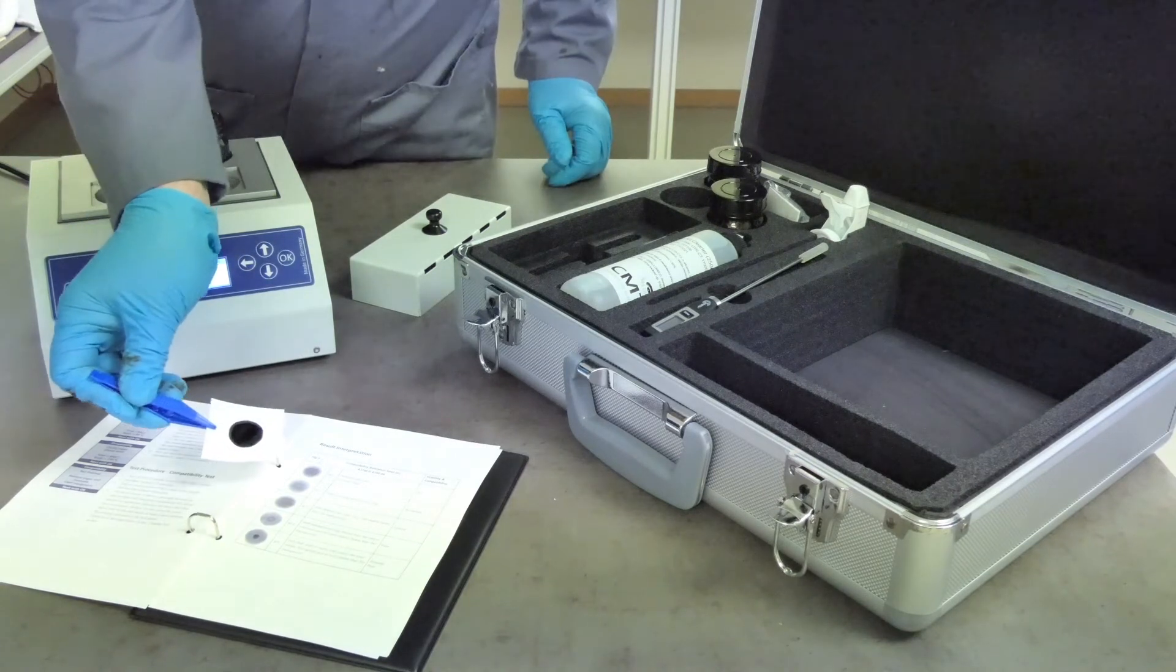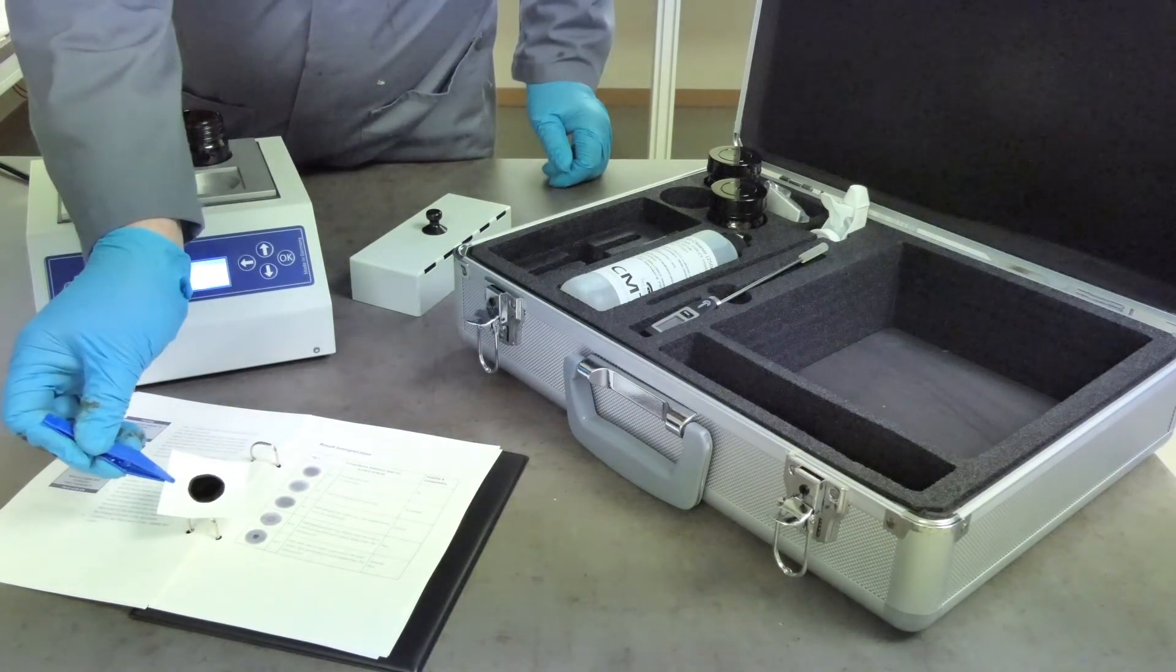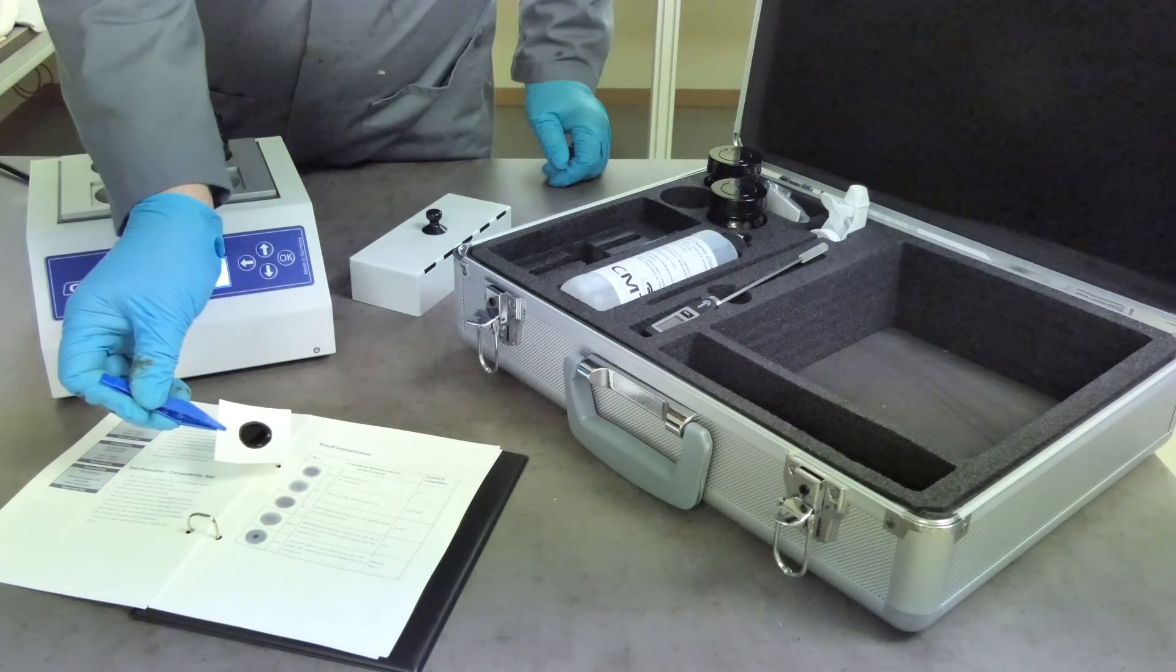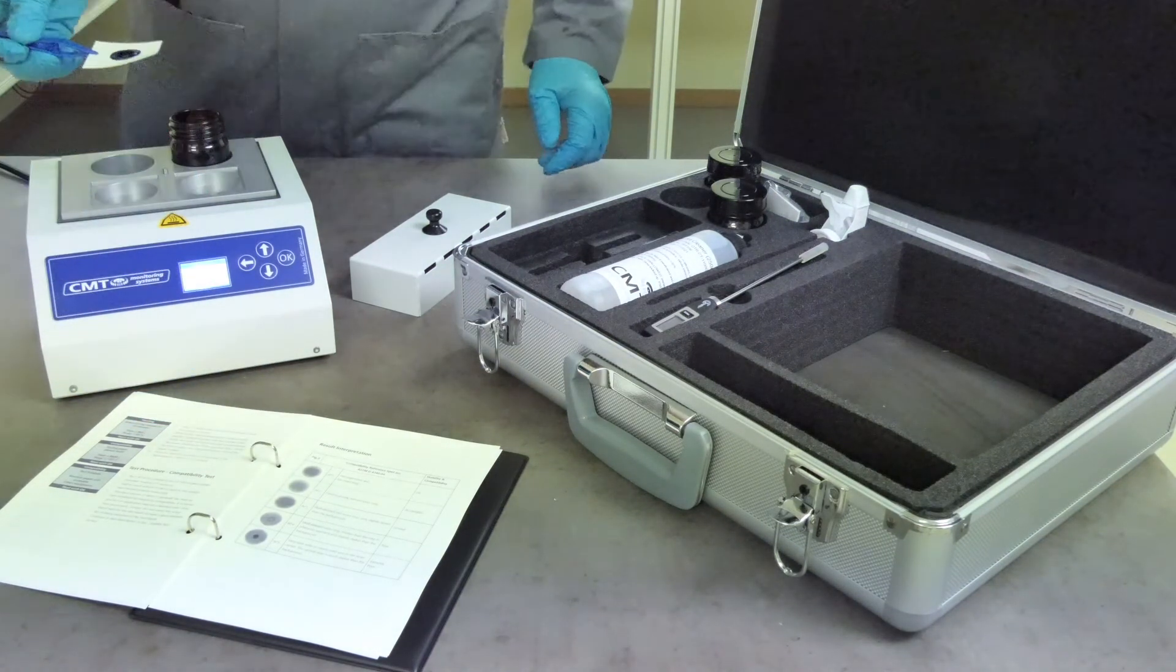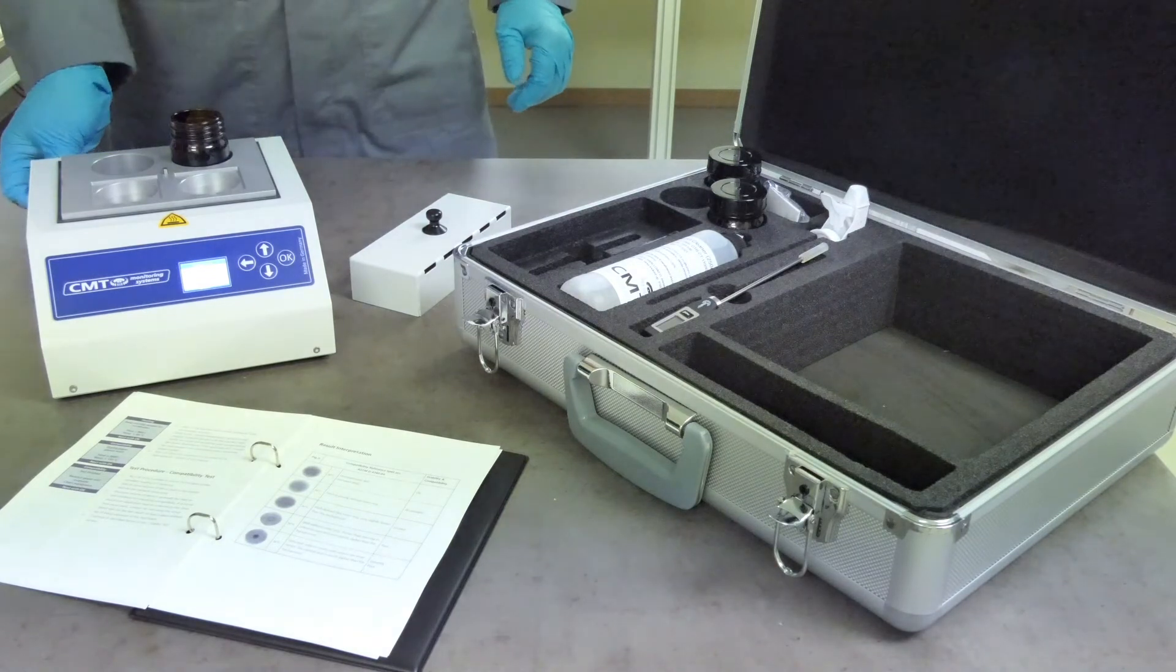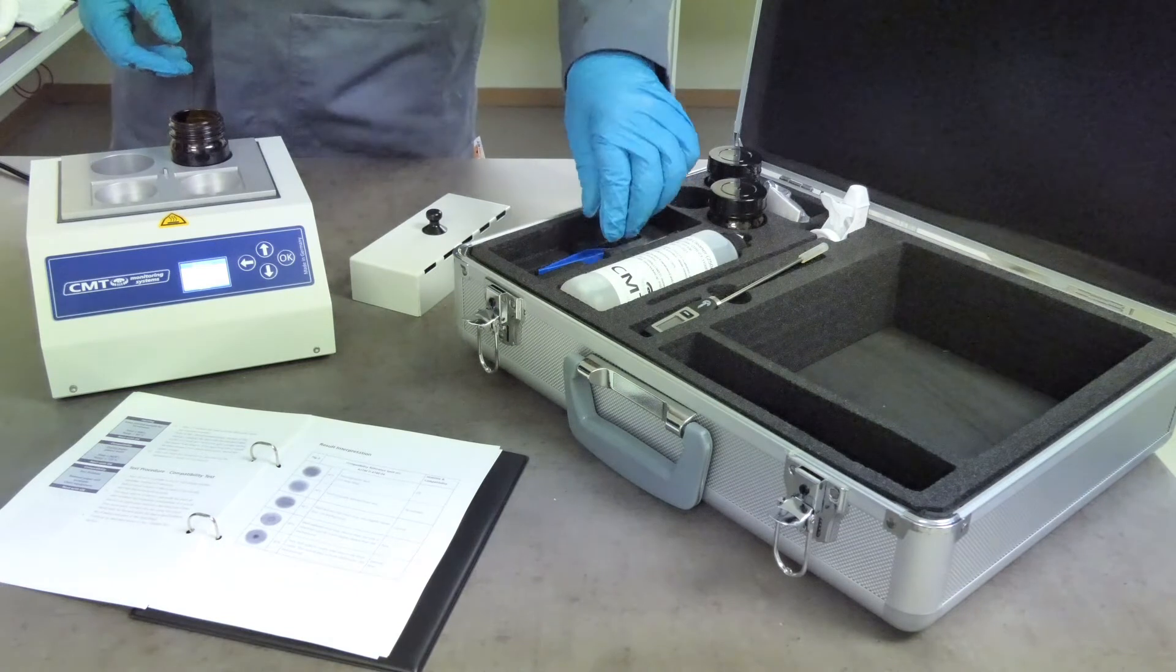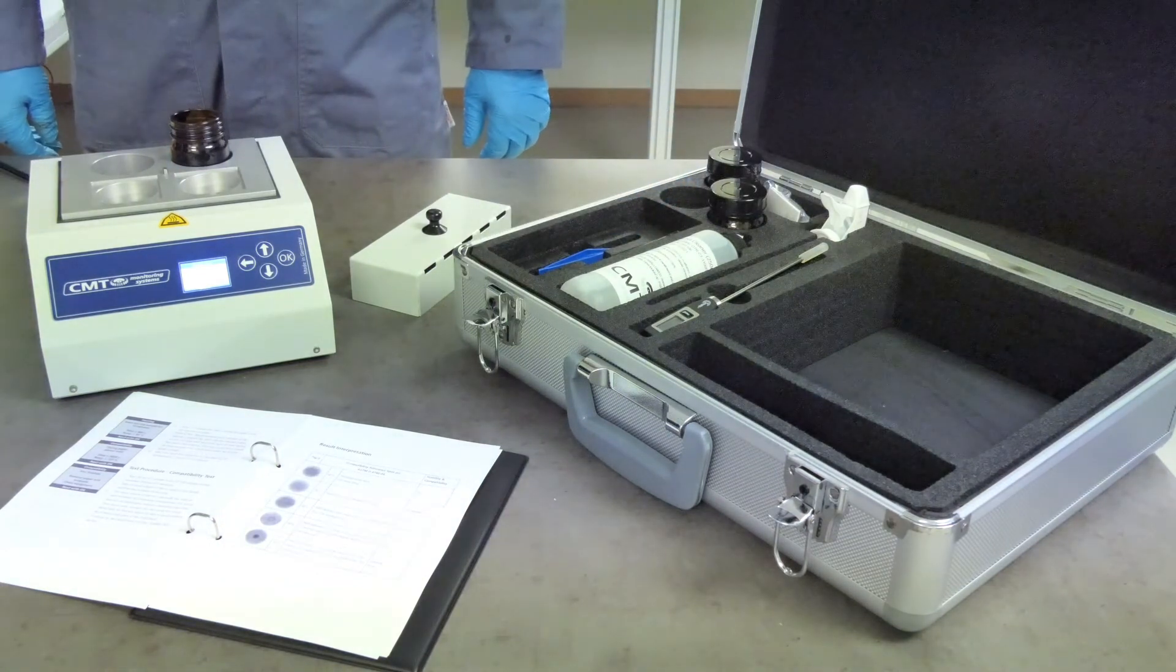Refer to the result interpretation section of the manual. Compare the spot with the standard table and record the spot number having the closest resemblance. If the spot looks like it would be rated between two consecutive spots, record the larger number.